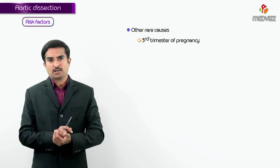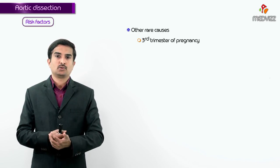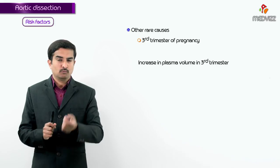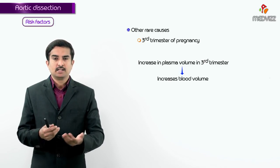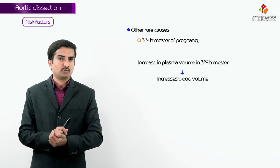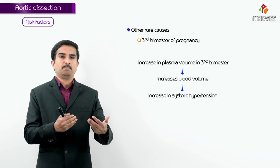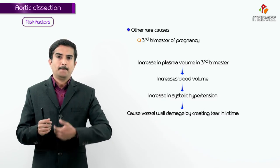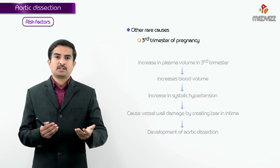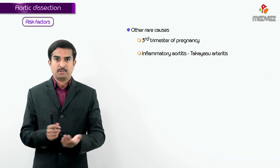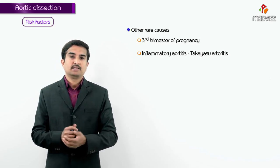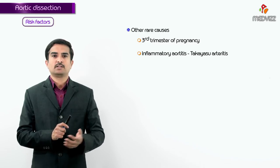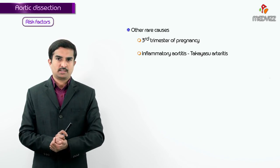Other rare causes include the third trimester of pregnancy, where increased plasma volume raises blood volume and systolic blood pressure, creating a tear in the intima that may predispose to aortic dissection. Inflammatory aortitis, such as Takayasu arteritis, involving the ascending aorta may also predispose to aortic dissection.